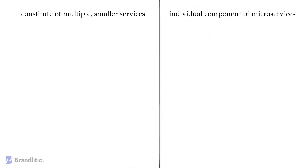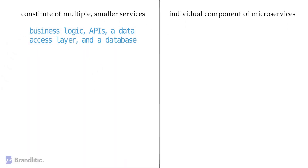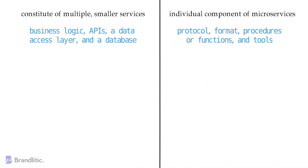Number five: the components of microservices architecture are business logic, APIs, a data access layer, and a database. On the other hand, the components of an API are protocol, format, procedures or functions, and tools. Number six: microservices are of two types — stateless and stateful microservices — whereas APIs can be public, private, partner, database, REST, remote, SOAP APIs, and many more.